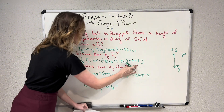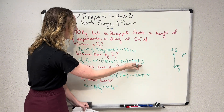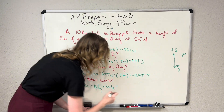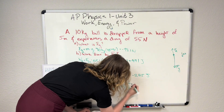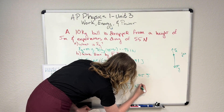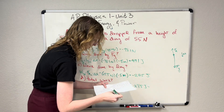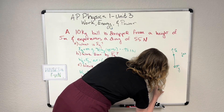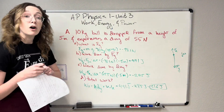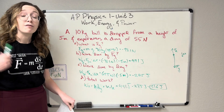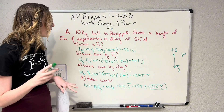That's going to be this positive 491 joules plus negative 275 joules — simple addition. So 491 joules minus 275 joules is equal to 216 joules. That is the total work being done on our cannonball — the total amount of energy being given to it by the forces applied to it.